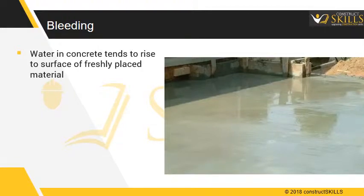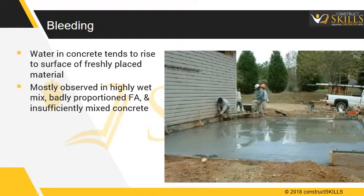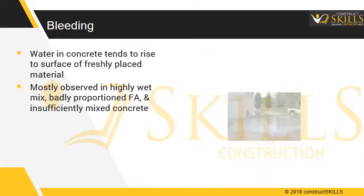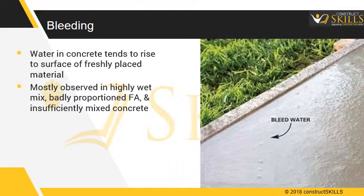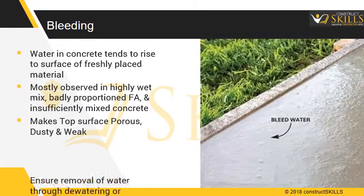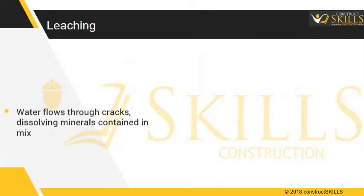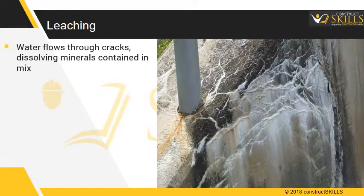Bleeding occurs when water in the concrete tends to rise to the surface of freshly placed material. It is predominantly observed in a highly wet mix, badly proportioned fine aggregates, and insufficiently mixed concrete. This makes the top surface porous, dusty, and weak. To avoid bleeding, ensure removal of water through dewatering or evaporation before finishing.